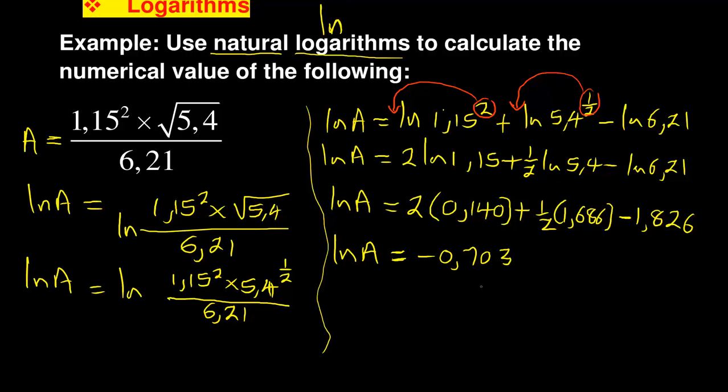So that is what we're getting. But now to find the final answer you have to write it as A equals. Now you need to remember that ln - the base that is hidden there is e. So it will be A equals e to the exponent negative 0.703. So that is the final step that is important.